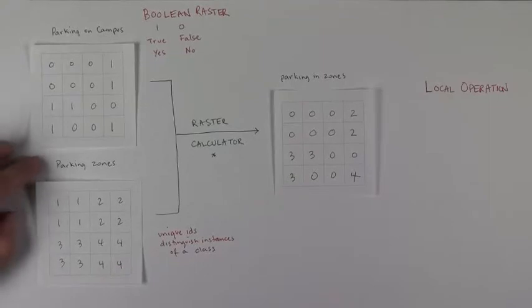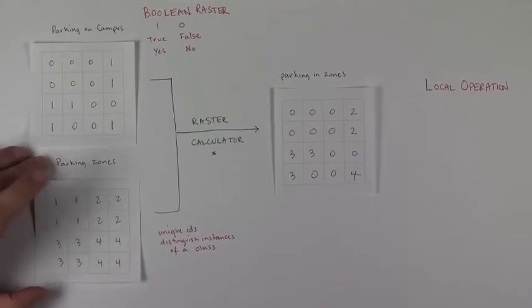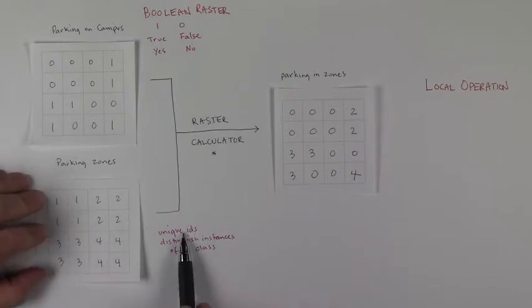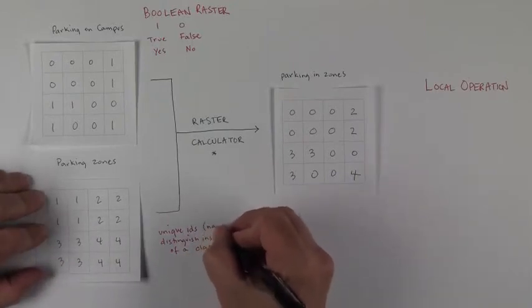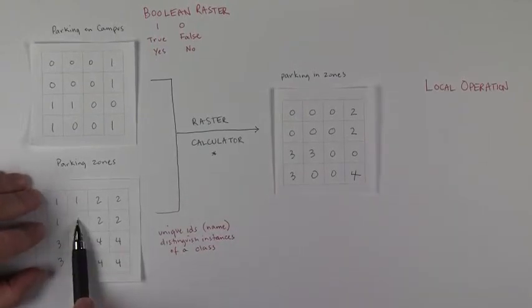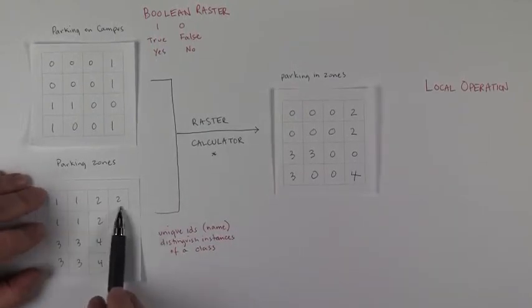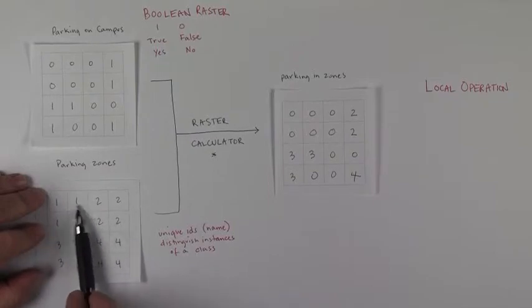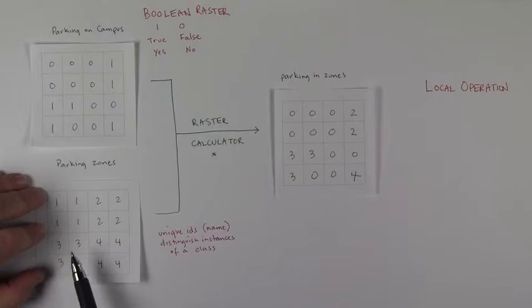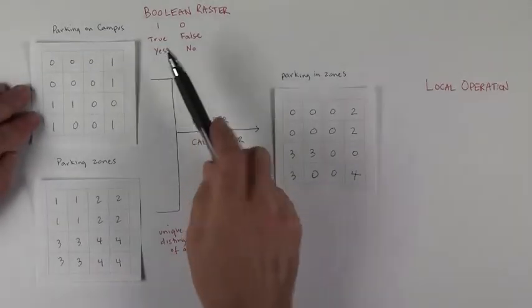And so the idea is that we're talking about a class of things called parking zones. And here the value is a unique ID. You can also think of it like a name. So this is the name of this parking zone is one, the name of this one is two. It could be that this one gets called By Hall and this one gets called Atwater and this one gets called something else. But the idea is that the numbers here are functioning different than they are here.